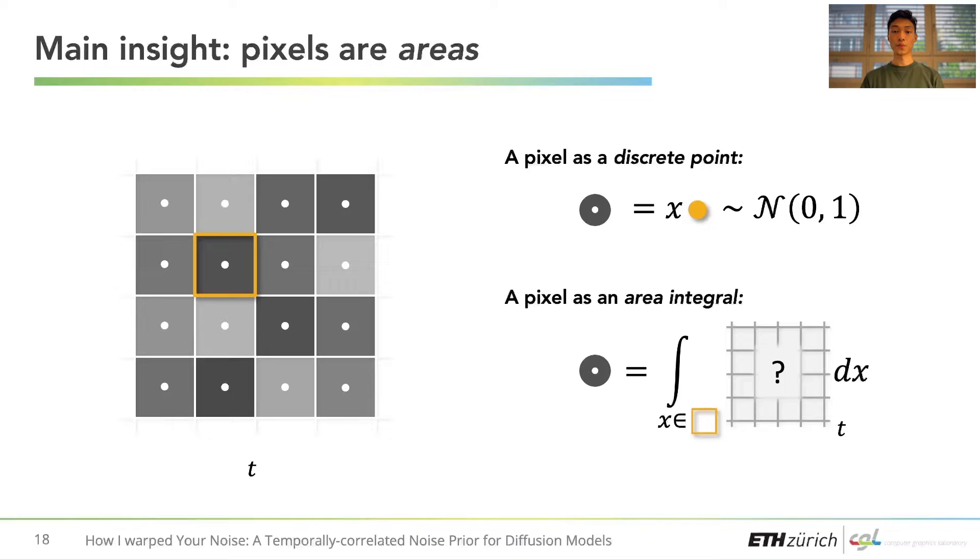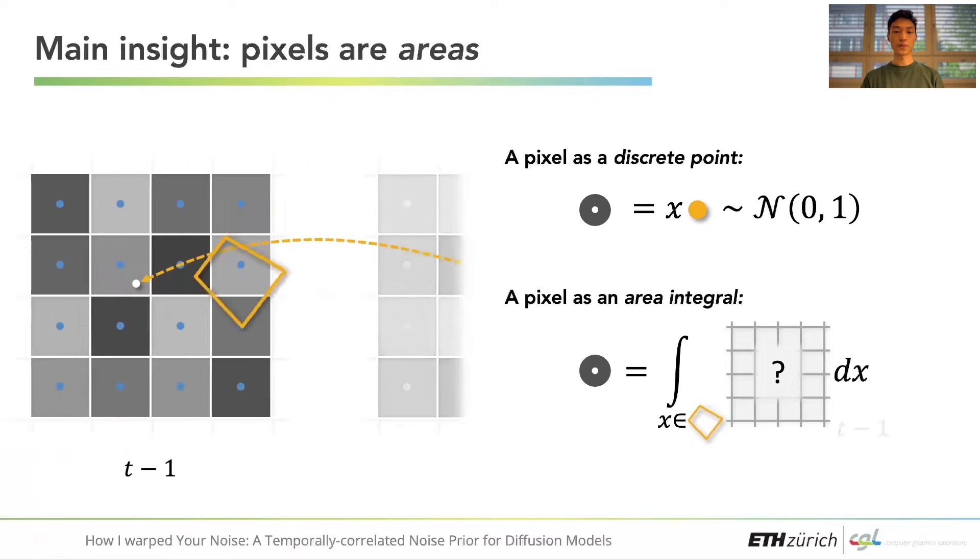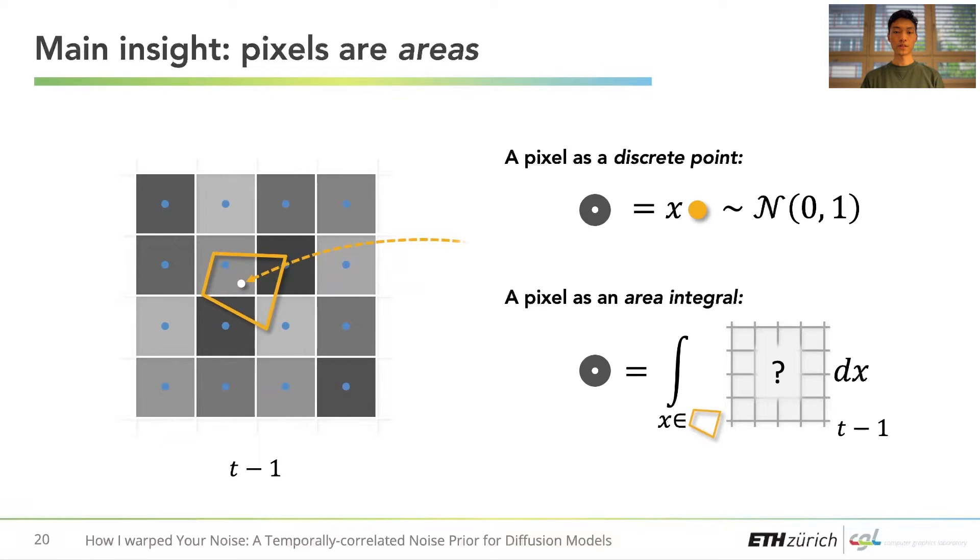Under this integral formulation, warping a pixel forward amounts to integrating the underlying signal of the previous frame over the back-warped pixel area. This integration domain can take any shape and does not have to align with the original pixels.